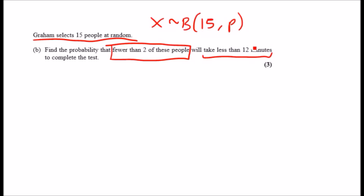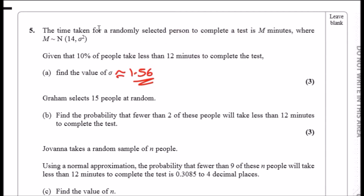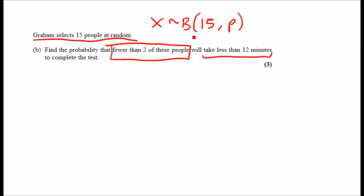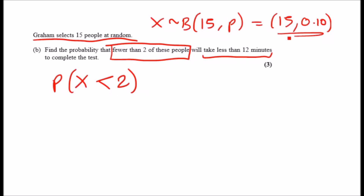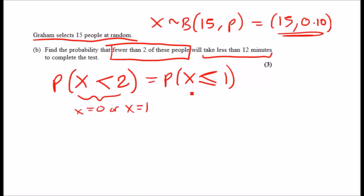We can ignore the normal distribution from the previous part. The key phrase 'less than 12 minutes' links back to the 10% proportion from Part A, so p = 0.10. The question asks for P(X < 2), which is the same as P(X ≤ 1) — covering X = 0 or X = 1, but not X = 2.